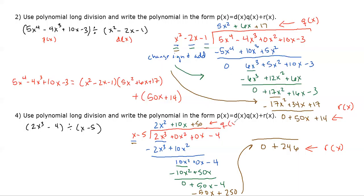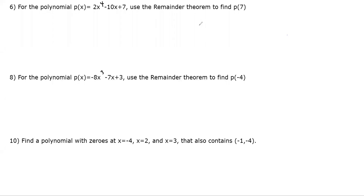We have a linear term here and a constant — this is our remainder. This is our quotient. So we can write: 2x³ − 4 = (x − 5)(2x² + 10x + 50) + 246. And that's it.